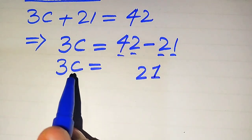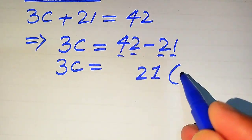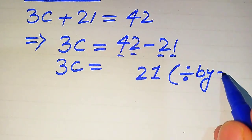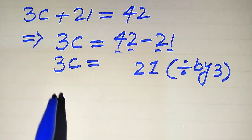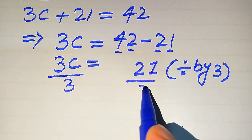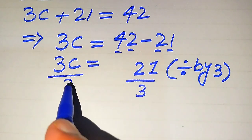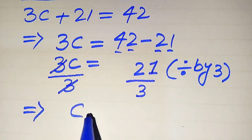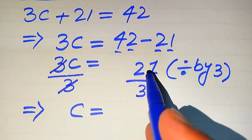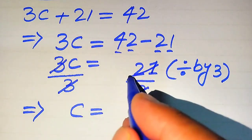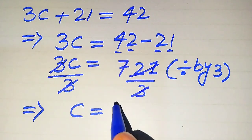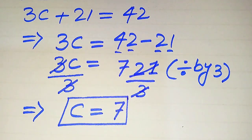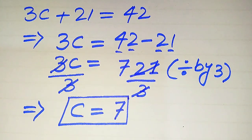Since we are solving for c, we need to eliminate the coefficient 3 from the left hand side. We divide both sides by 3. The 3 cancels out on the left, and on the right, 21 divided by 3 gives us 7, since 3 sevens are 21. So we get c equals 7.